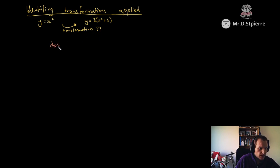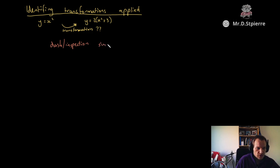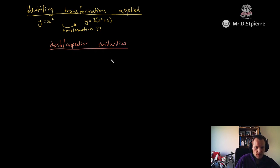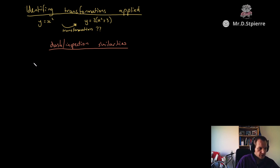Our dash slash inspection methods both start with the same step, which I'll call similarities. Both of them start with similarities.